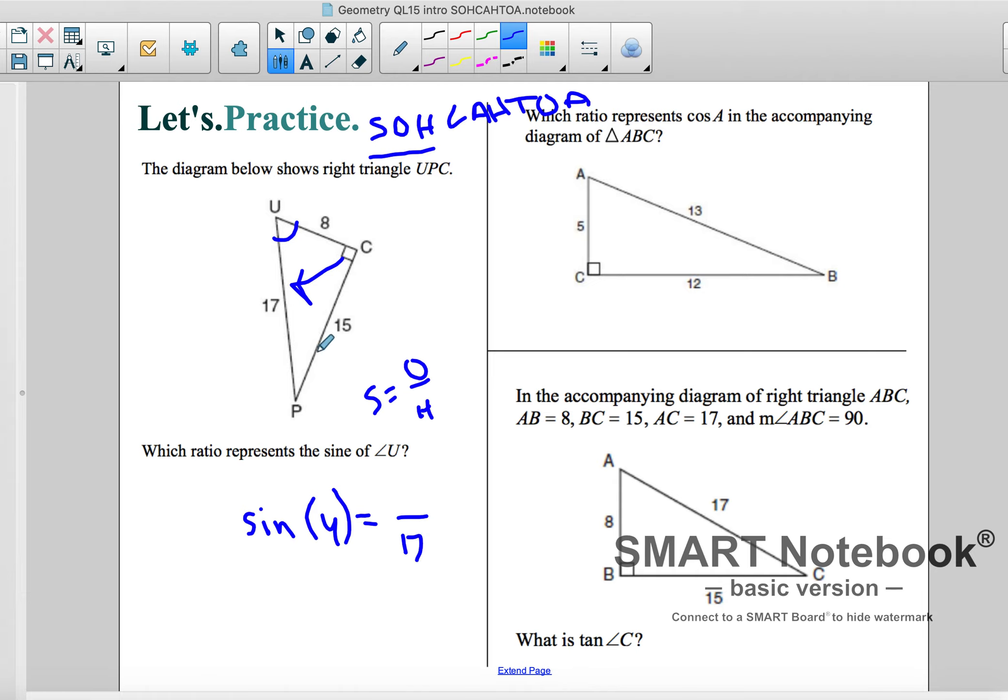So I know sine of U is equal to something, my opposite over 17. Well, the opposite of U is 15. So it's just 15 over 17. And it's that easy. So that's the ratio there.